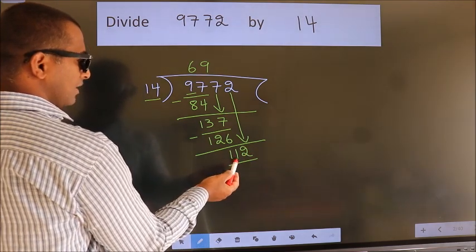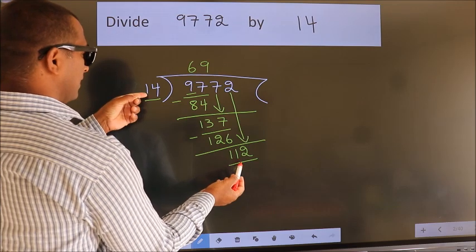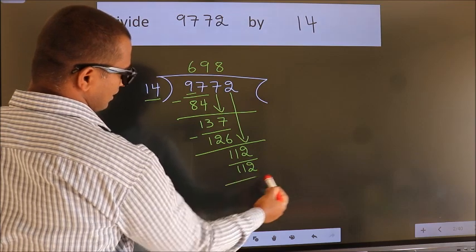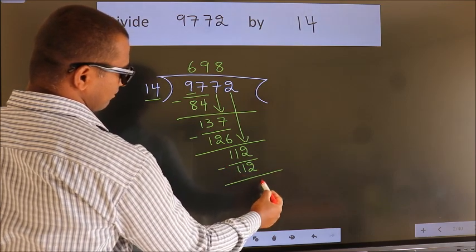When do we get 112 in 14 table? 14 eights, 112. Now we subtract. We get 0.